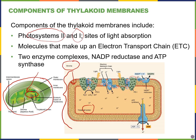Photosystem 2 actually comes first and then photosystem 1 comes later. The reason they're numbered that way is because photosystem 1 was discovered first and then photosystem 2 was discovered later. But when we put it all together we realized that within photosynthesis, photosystem 2 actually functions first and then photosystem 1 comes into play later.